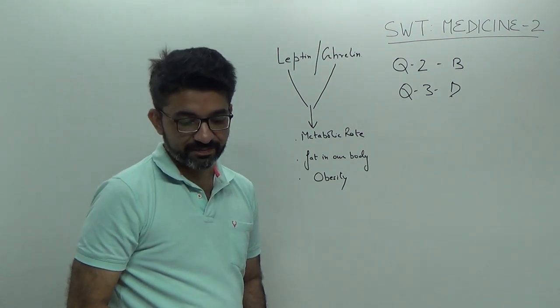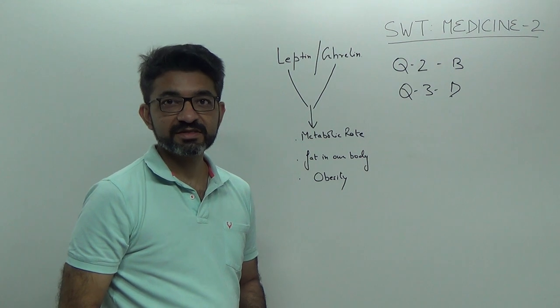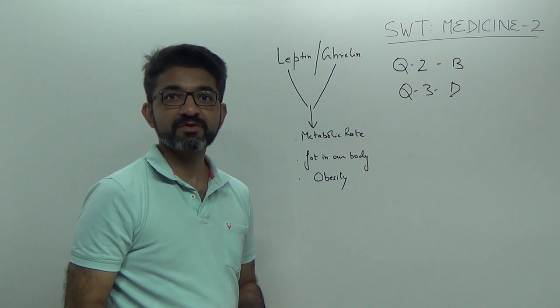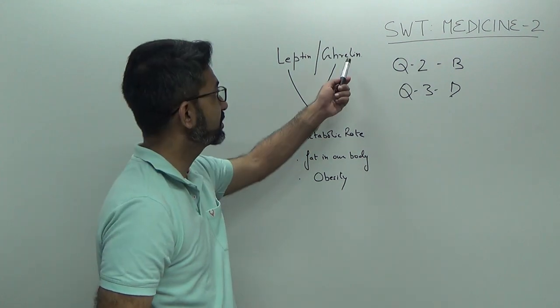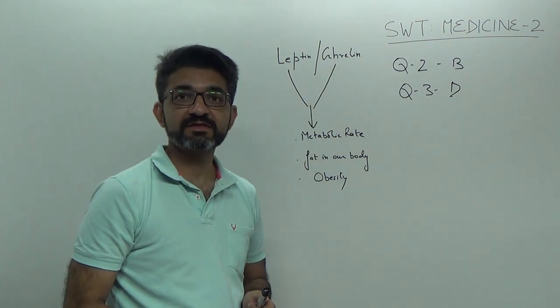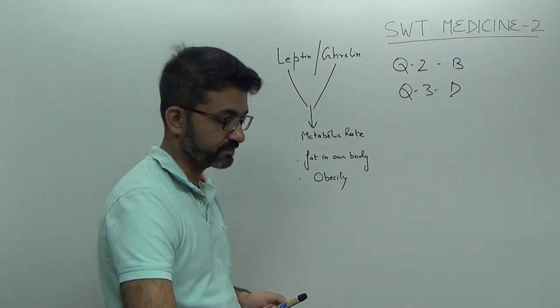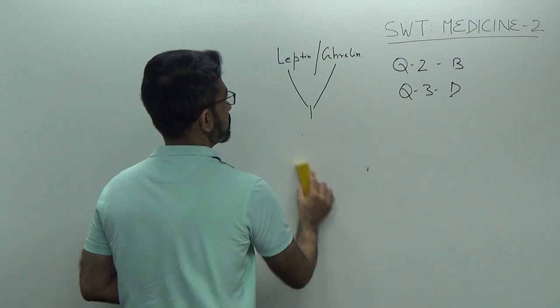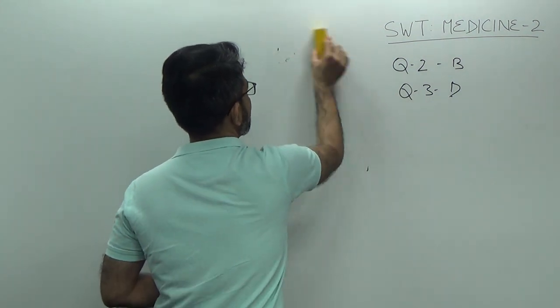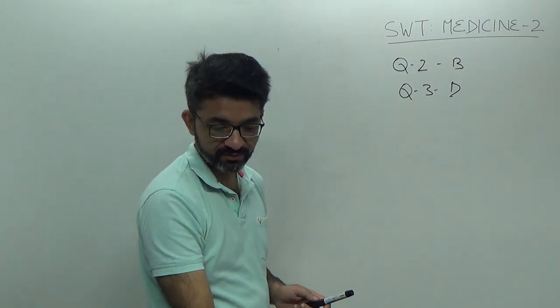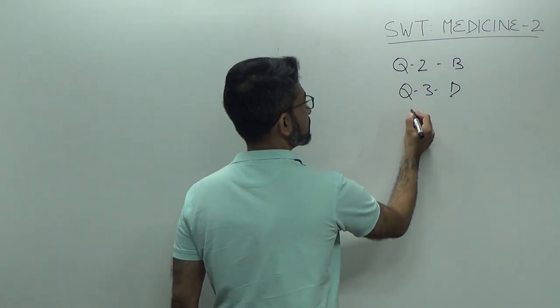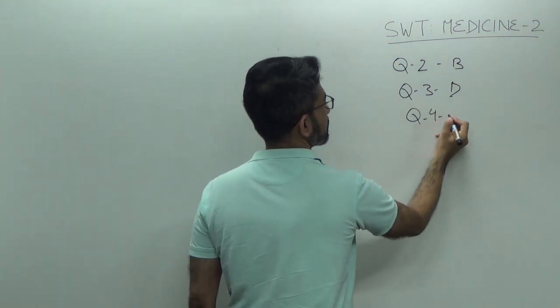So, leptin reduces insulin resistance, so it promotes weight loss. Whereas ghrelin, it increases insulin resistance, it promotes weight gain. So, this is question number 4, answer is leptin.